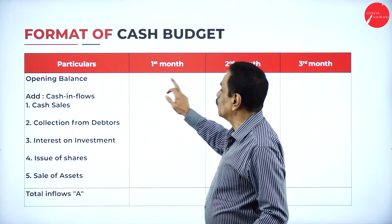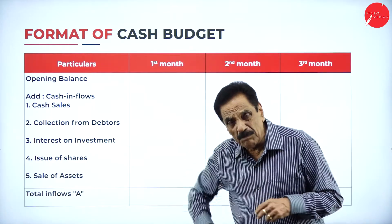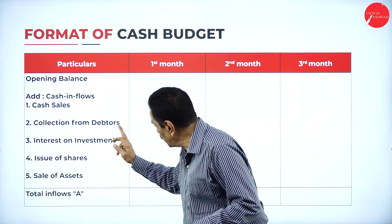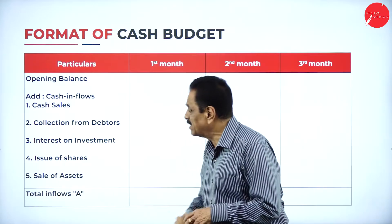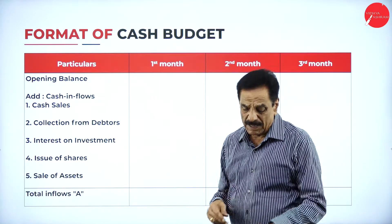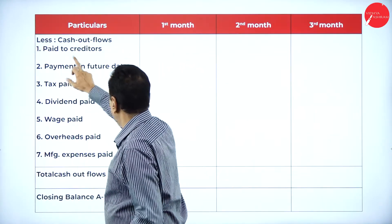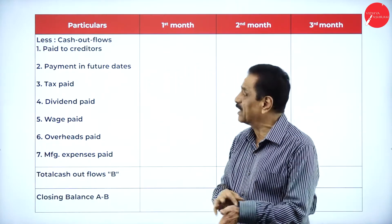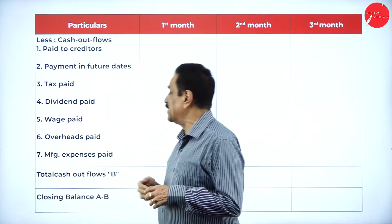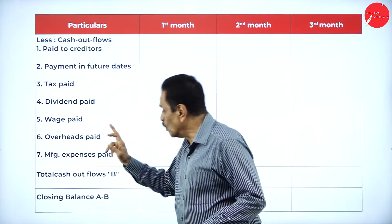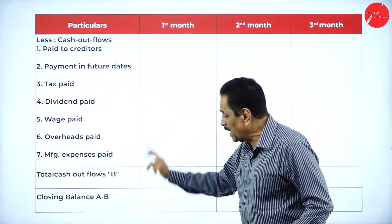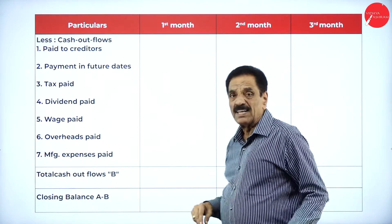This is the format. We start with the opening balance. The closing balance of the last month will become the opening balance for the next month. Cash inflows include: cash sales, collection from debtors, interest on investment, and issue of shares (equity or preference), and sale of assets. Cash outflows include: payment to creditors for purchases, tax paid to government, dividend paid to shareholders, wages paid, overheads, and manufacturing expenses. A minus B gives the closing balance.